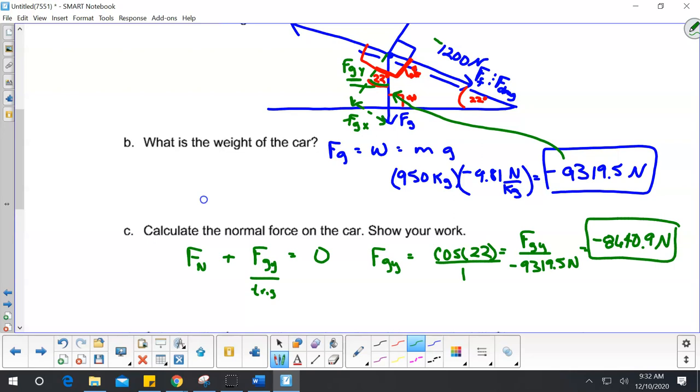Well, if this is plus a negative 8,640.9 newtons equals 0, we know this, then it's congruent to it. So my answer is a positive 8,640.9 newtons. So that's what the force normal is.